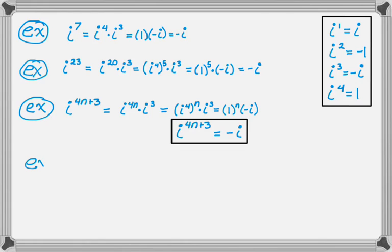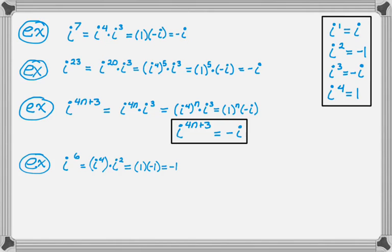Let's see if we can do that with a couple of other things. Say I have i to the sixth. That's going to be i to the fourth times i to the second. i to the fourth is 1, times i squared is negative 1, so that's going to be negative 1.